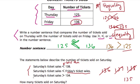Last, it says Saturday's ticket sales were bigger than, right? Because now the symbols facing this side, 134. So what's the only number that's bigger than 134 but less than 136? Well, that's 135. And that's the answer.